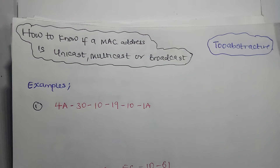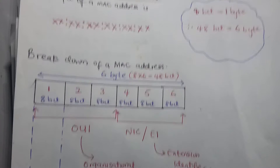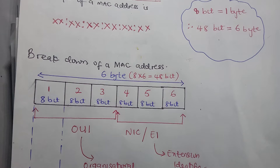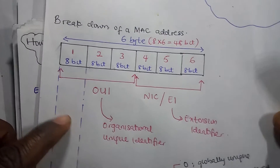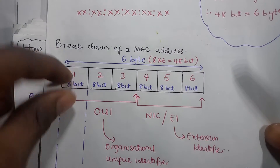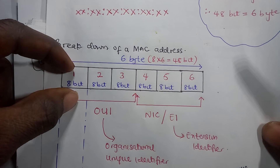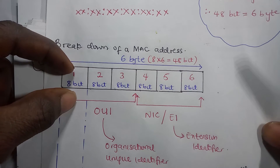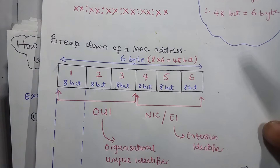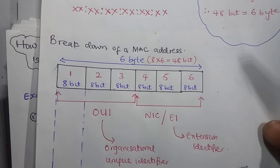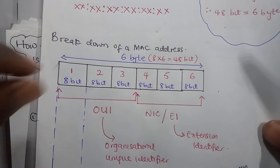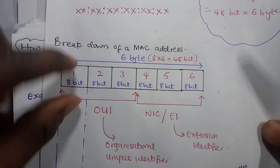In our previous video about MAC addresses, we discussed how to work with them, but I want to solve more examples. A MAC address consists of 48 bits or 6 bytes. The first 8 bits — the first byte — is the most important target we can use in identifying if a MAC address is unicast or multicast, because broadcast in general is just fixed. So we are specifically discussing unicast and multicast. Just look at this first byte, which consists of 8 bits.